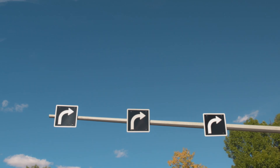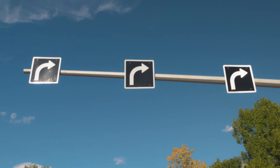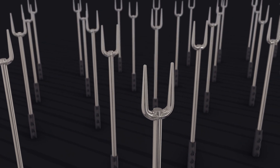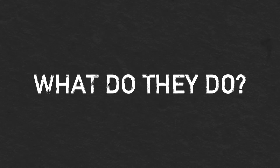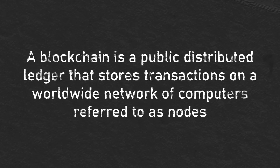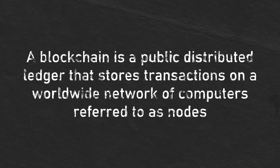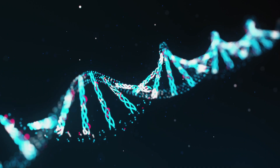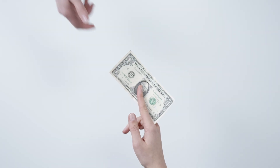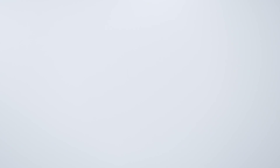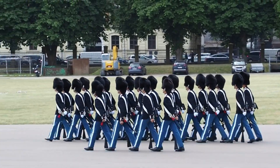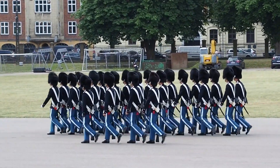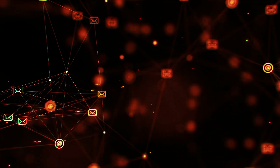Blockchain protocol, simply put, refers to rules that the blockchain adheres to. A blockchain is a public distributed ledger that stores transactions on a worldwide network of computers referred to as nodes. All nodes are alike and are linked via the internet. Before a transaction can be recorded on the blockchain, it must be verified by all participating nodes on the network. All of the peers' nodes in a blockchain network must all adhere to the same set of rules or blockchain protocols for the network to function properly.